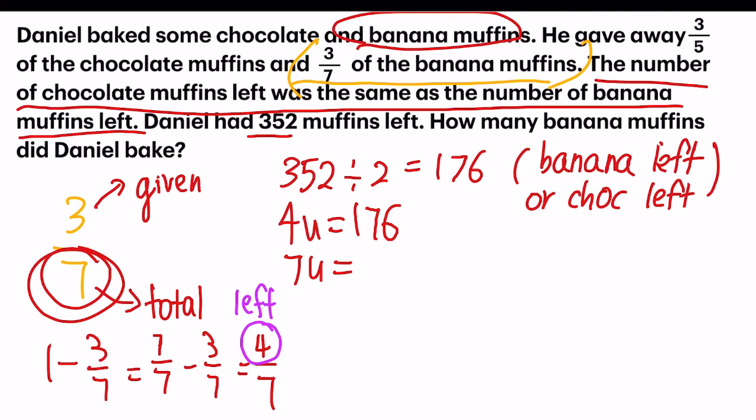So my first step is I have to find one unit. To find one unit, I will take 176 divided by four, then I multiply by seven units, which is the units that I'm finding here.